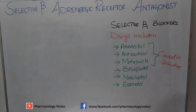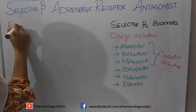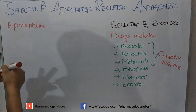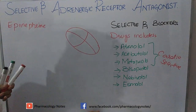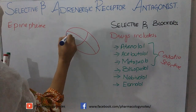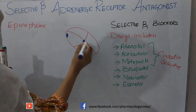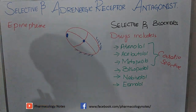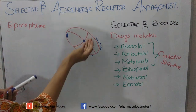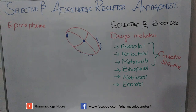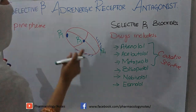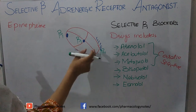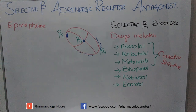Now, how do these drugs act? We have catecholamines or neurotransmitters in the body — epinephrine and norepinephrine. What do epinephrine and norepinephrine do with the heart? On the heart there is the SA node, AV node, Purkinje fibers, and myocardium. On the SA node, AV node, and myocardium, the receptor present is beta-1.